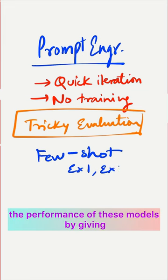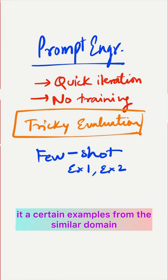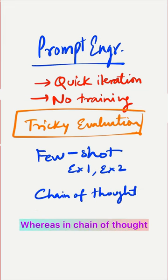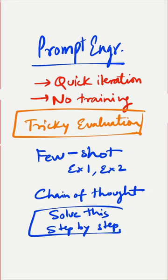Few-Shot is one way of improving the performance of these models by giving them examples from similar domains. In Chain of Thought, you ask the model to solve everything step by step.